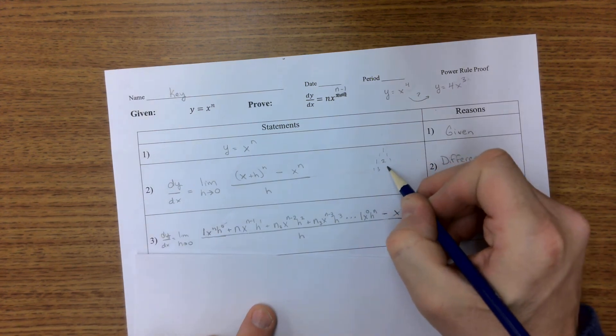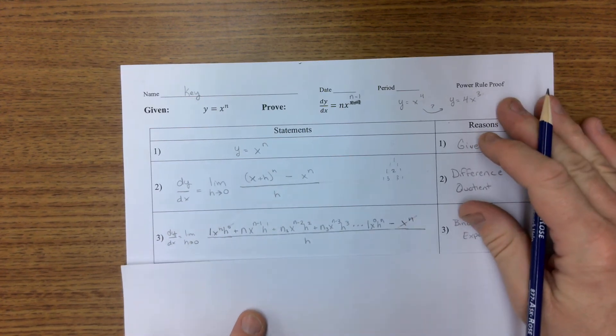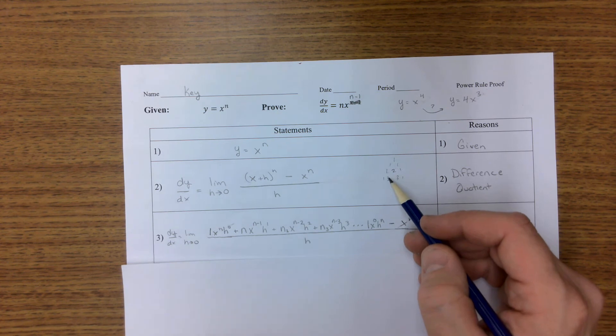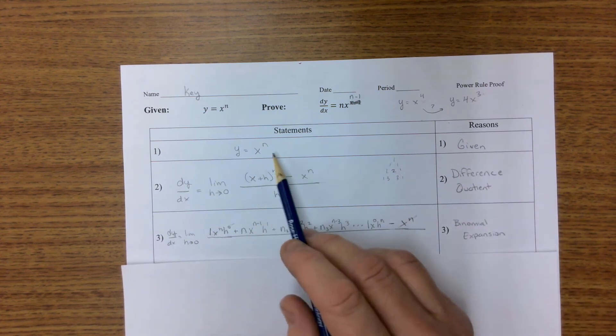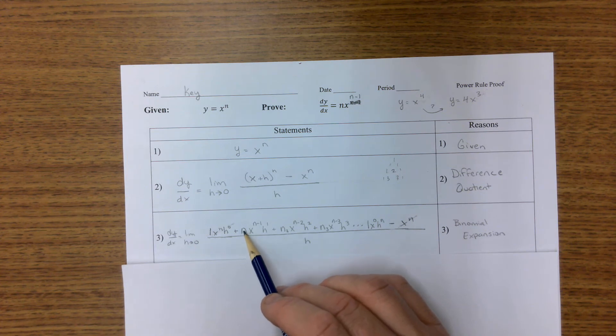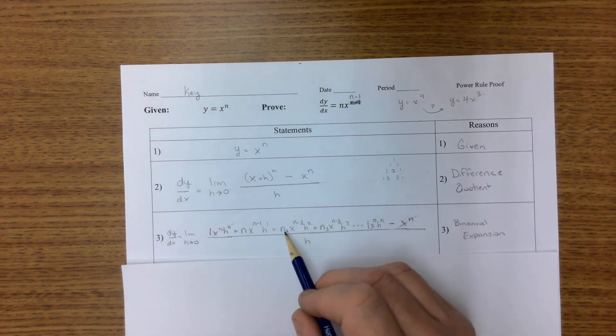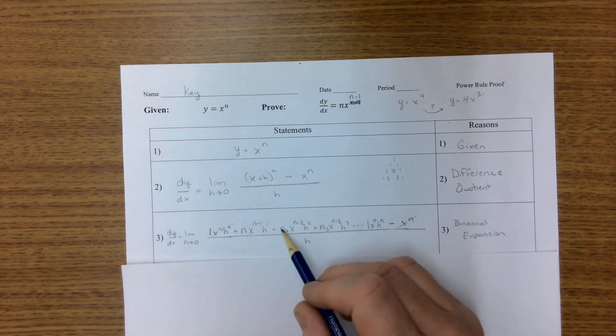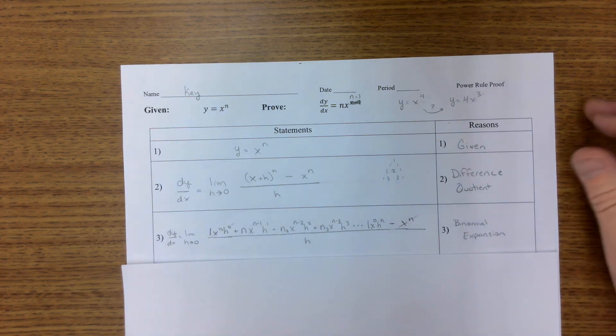We can use Pascal's triangle to figure them out, and the most important thing is the first coefficient's one of course because that's the outside row. The second coefficient is the next row which is the value of the exponent itself, so I just put an n there. Now the third coefficient and more are more difficult to find and we're not even going to name them right now. We're just going to call them n sub 2 and n sub 3. We don't know the value of that but it's not necessary as you'll see later.